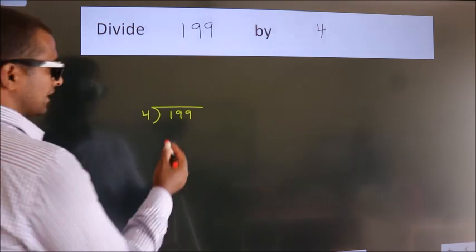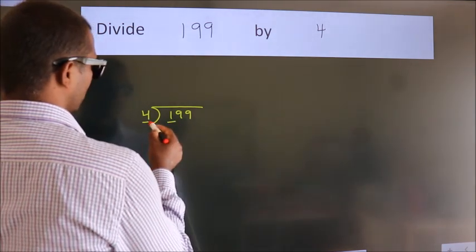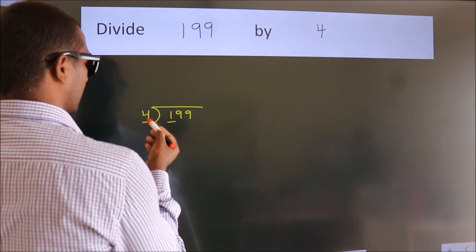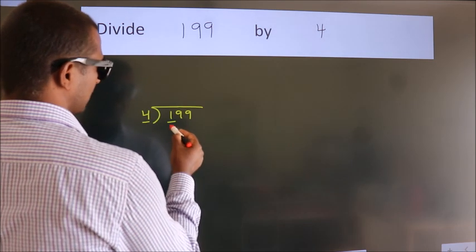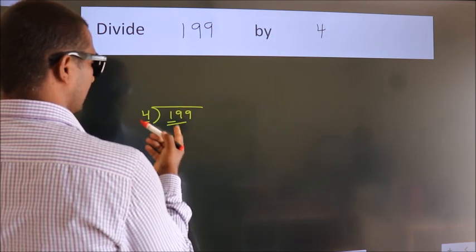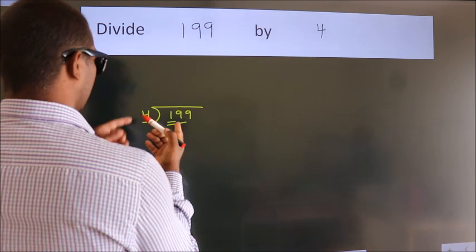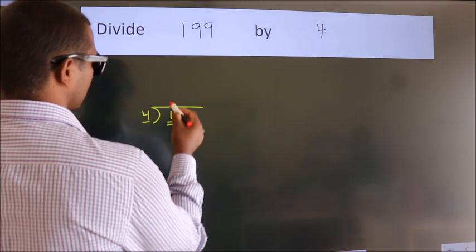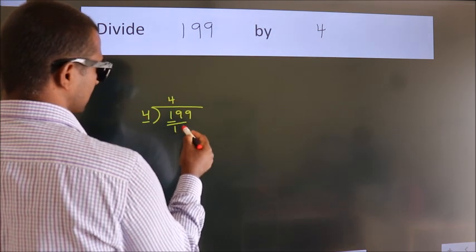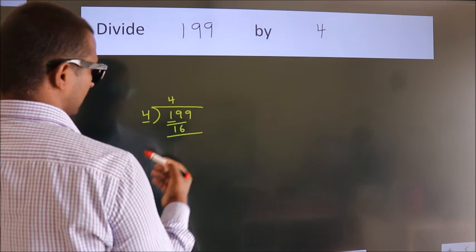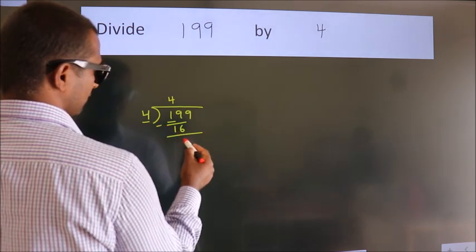Next. Here we have 1. Here 4. 1 is smaller than 4, so we should take 2 numbers. 19. A number close to 19 in the 4 table is 4 times 4 equals 16. Now we should subtract. We get 3.